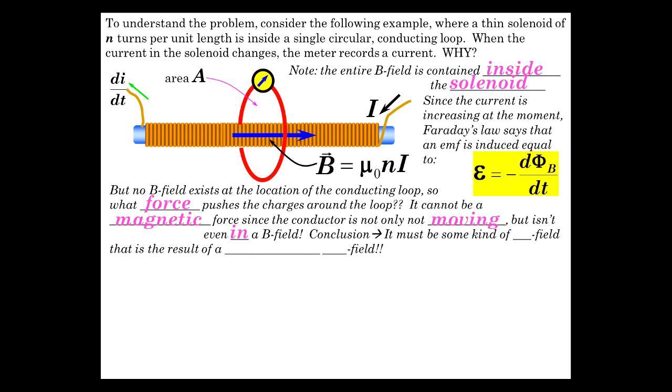Well, there's only really one conclusion when you exclude all the obvious. The conclusion, it has to be some sort of electric field that's the result of the changing magnetic field. A changing magnetic field caused there to be a current flow even though there's no magnetic phenomena here at the location of the loop. So hopefully you feel the import of this little discrepancy we have here.